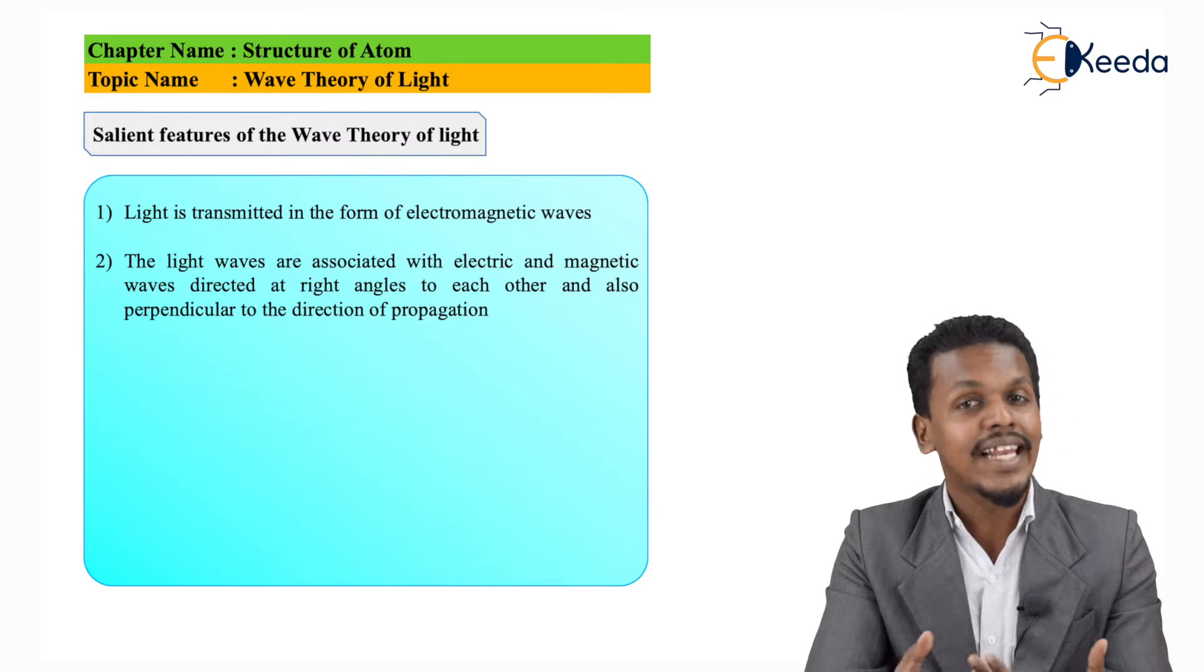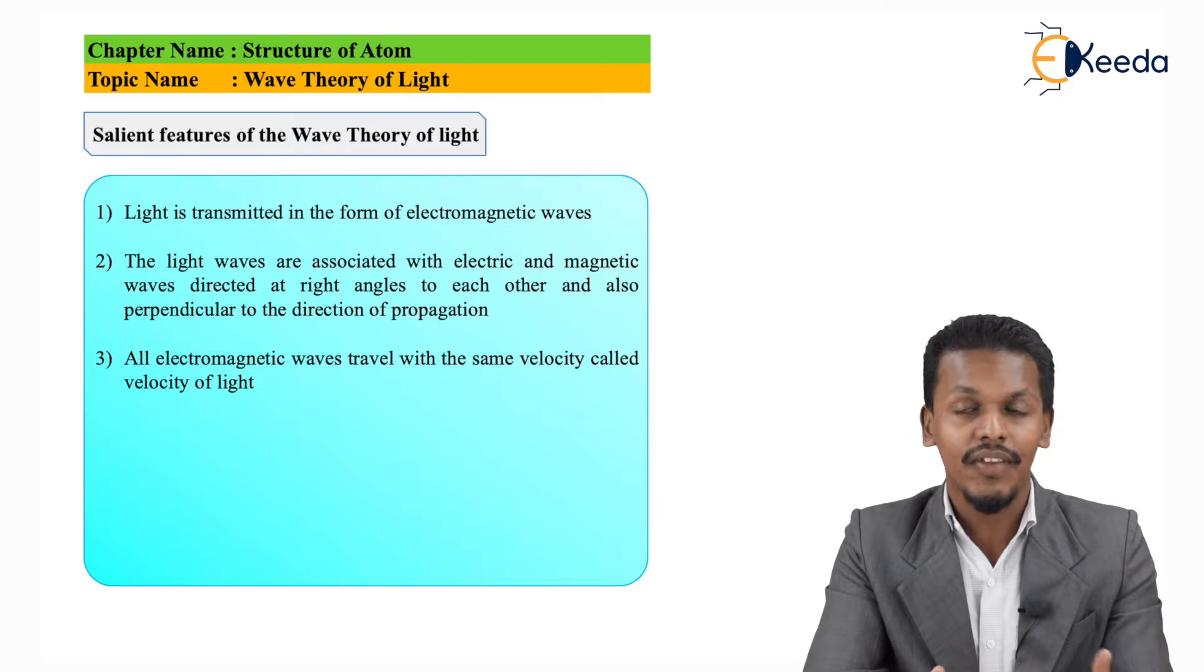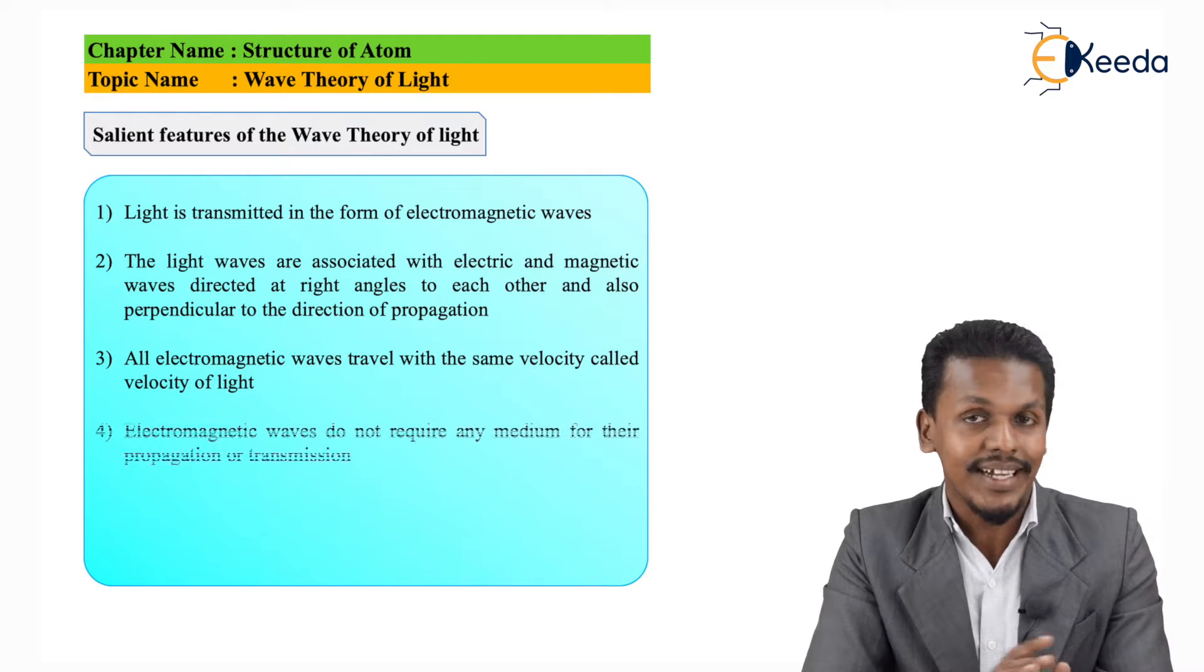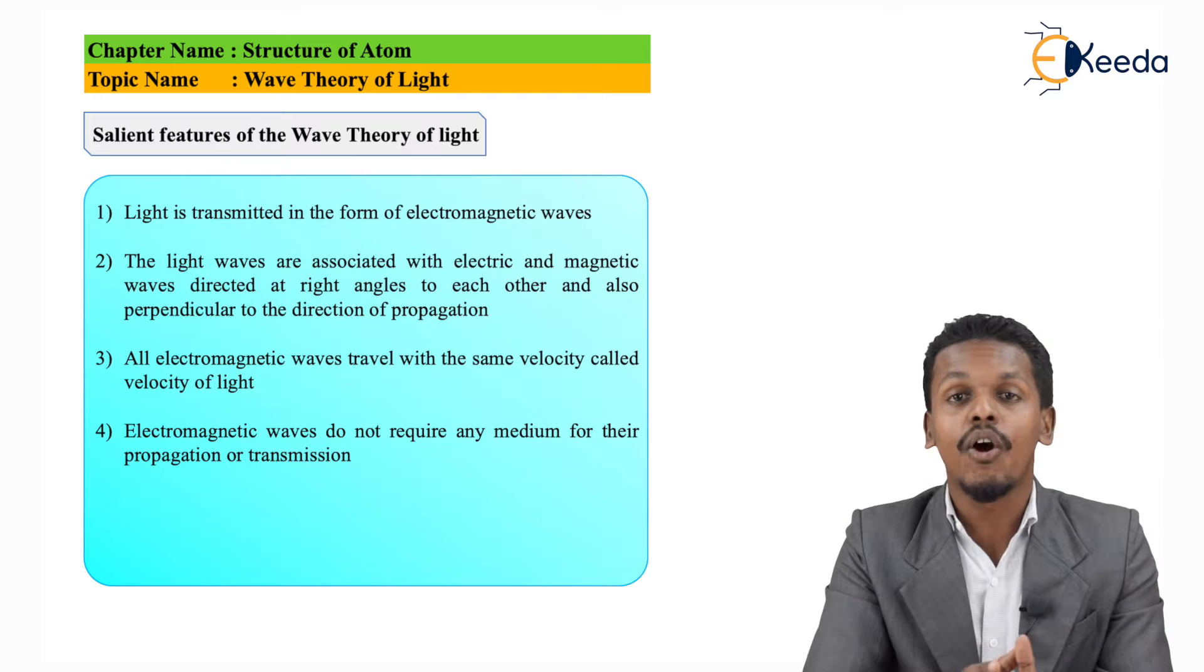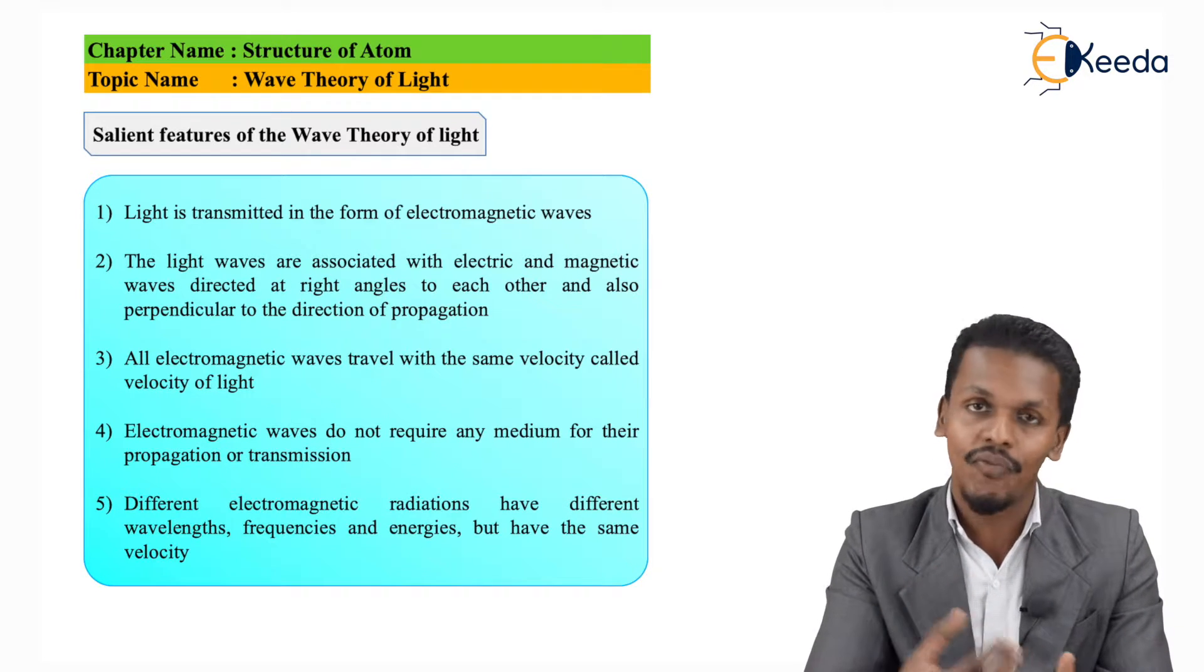Electromagnetic wave is a combination of an electric wave and magnetic wave. They are perpendicular to each other and they travel in a straight direction, and the velocity of every electromagnetic wave is the same - that is nothing but the speed of light.